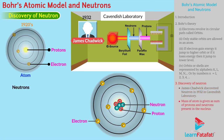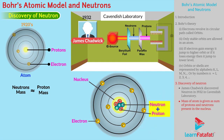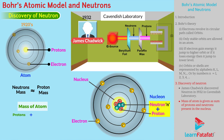Neutrons have a mass similar to that of a proton. The nucleus of an atom contains neutrons along with protons. Together these are called nucleons. Neutrons are represented by small n. The mass of an atom is given as the sum of protons and neutrons present in the nucleus.